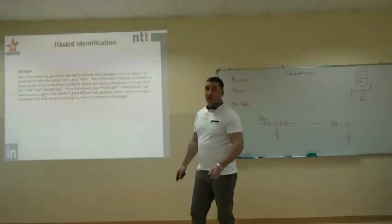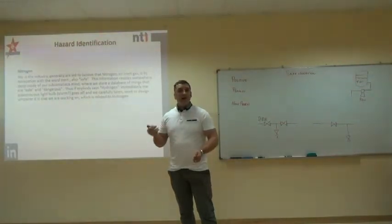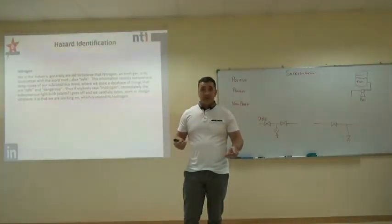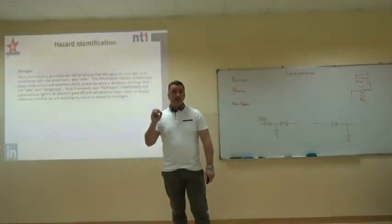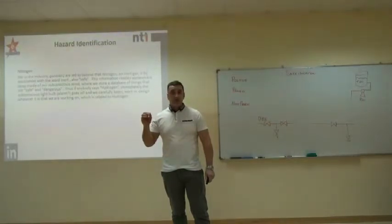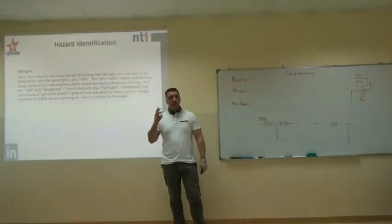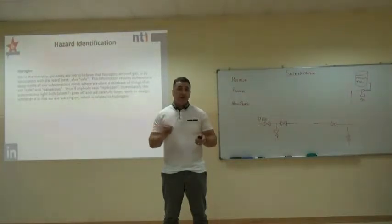Nitrogen: we use it a lot in process for purging and blanketing. Why is nitrogen dangerous? It's an asphyxiant — it displaces the air. A lot of people think it's safe because it's inert and doesn't aid combustion. The air we breathe is 70-something percent nitrogen, but if we breathe pure nitrogen we will be dead very quickly — two or three breaths and you're dead. If you've got a process vessel with a permanent nitrogen connection, that must be isolated too. Lots of people forget to isolate the nitrogen supply.